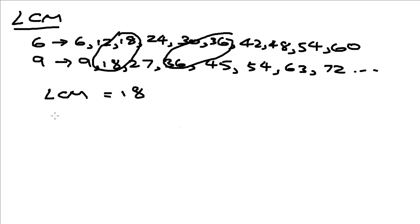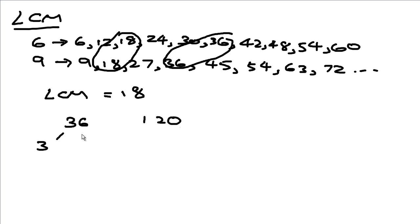So what happens if we have bigger numbers? Are we going to list down all of them? Because it's going to take a lot of time. So we can also use prime factorization to find them. Let's find the LCM of 36 and 120. For 36, by prime factorization you get 3 and 12, break that down to 2 and 6, and then 2 and 3.